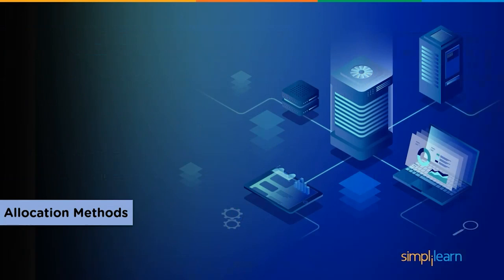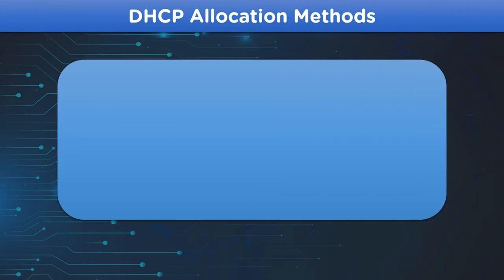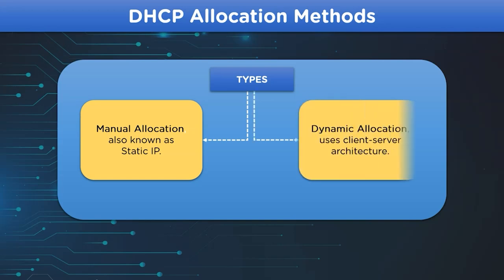Now let's take a look at the allocation methods for the DHCP protocol. The allocation method of DHCP is divided into two types. The first type is manual allocation, which as the name suggests is the assigning of an IP address to the system manually by the user. The second method is dynamic allocation, which uses a client-server architecture to assign an IP address to the system.